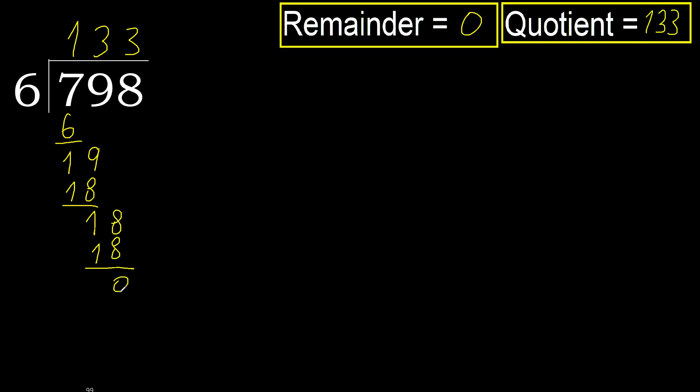Ok, 0. Therefore 798 divided by 6 is 133.